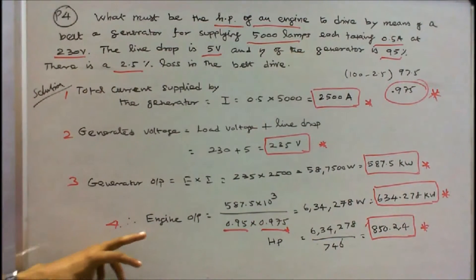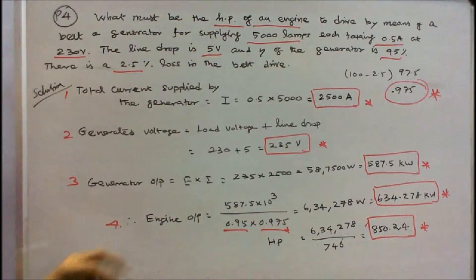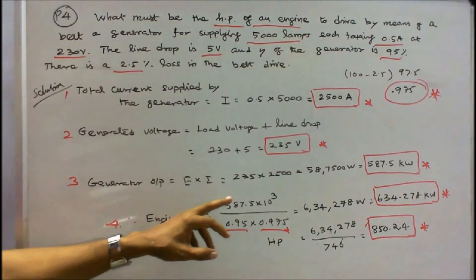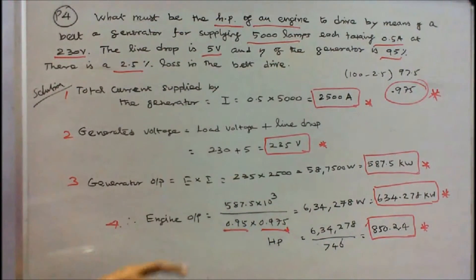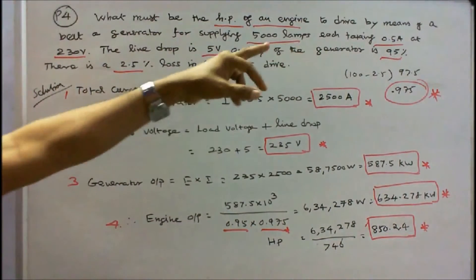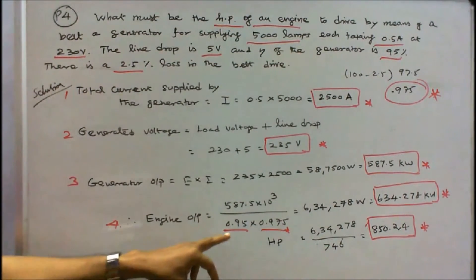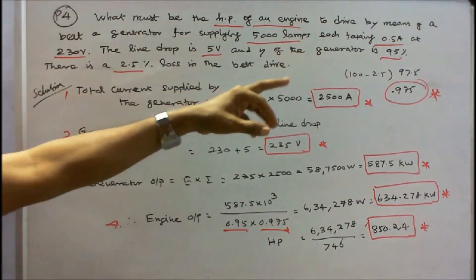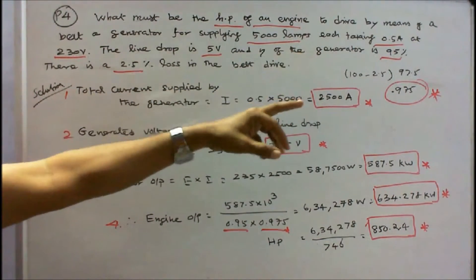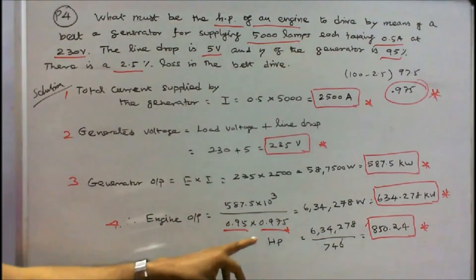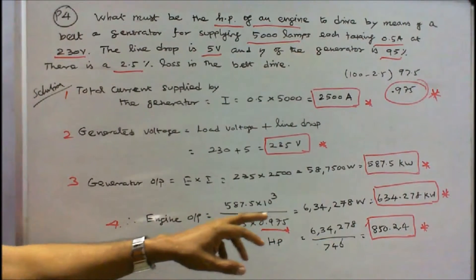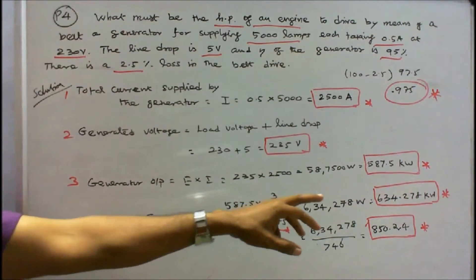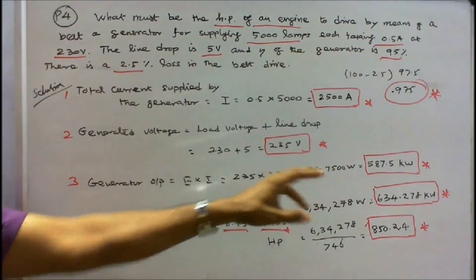Engine output is step 4: 587.5 into 10 power 3 divided by 0.95 for generator efficiency. And there is 2.5% loss in belt drive, therefore efficiency is 100 minus 2.5, that is 97.5 divided by 100, equals 0.975. That is equal to 634.278 kilowatts.